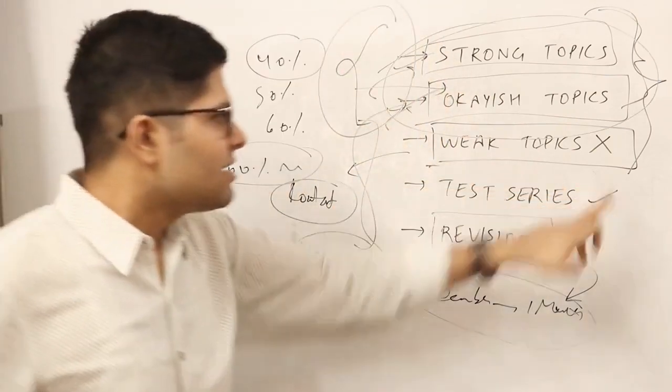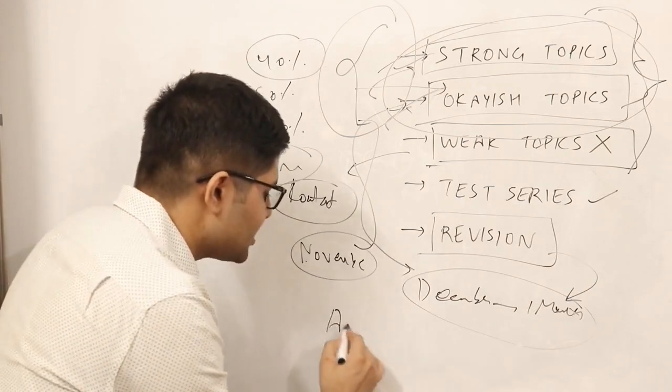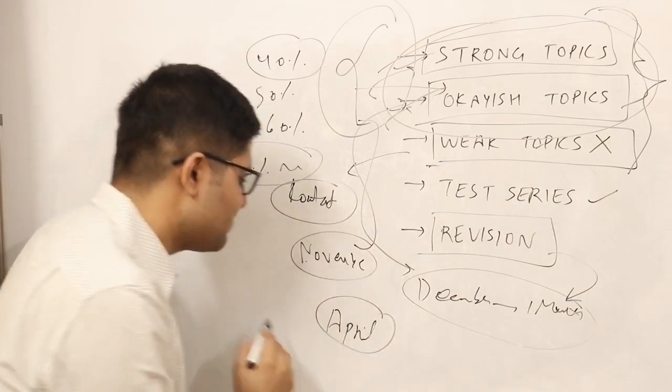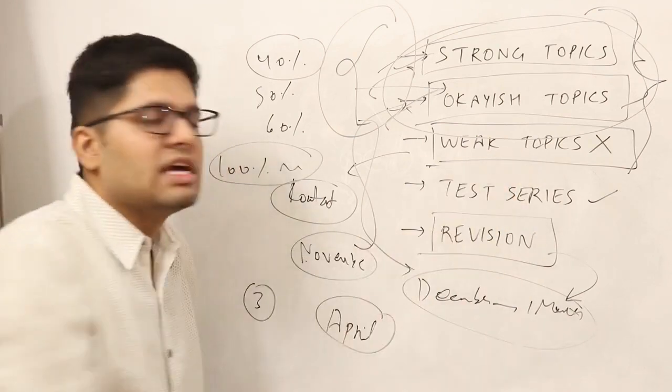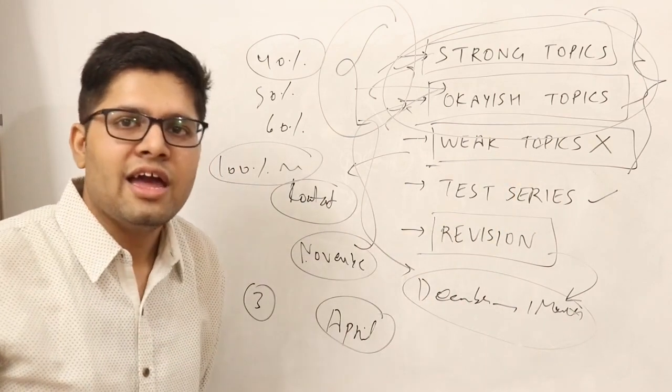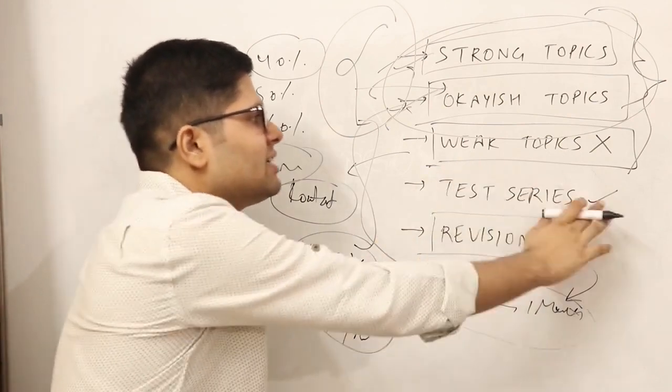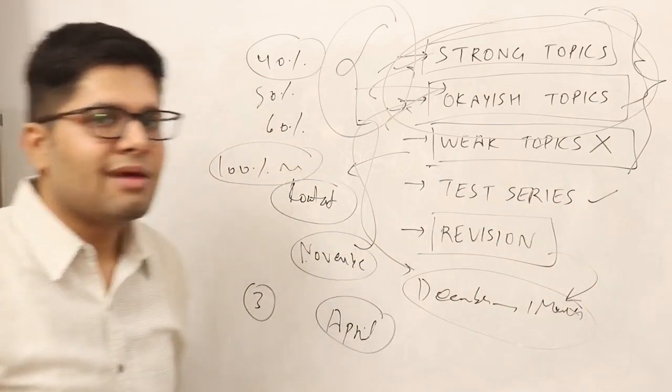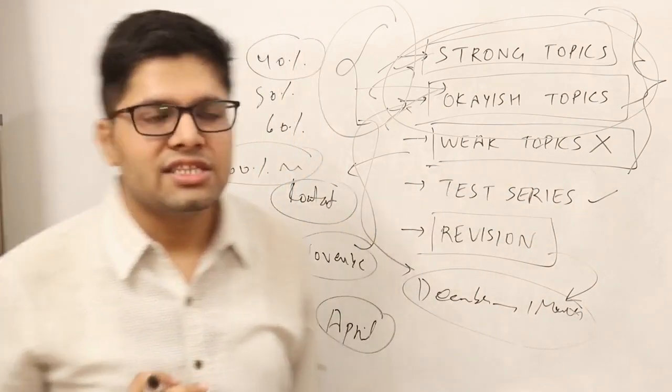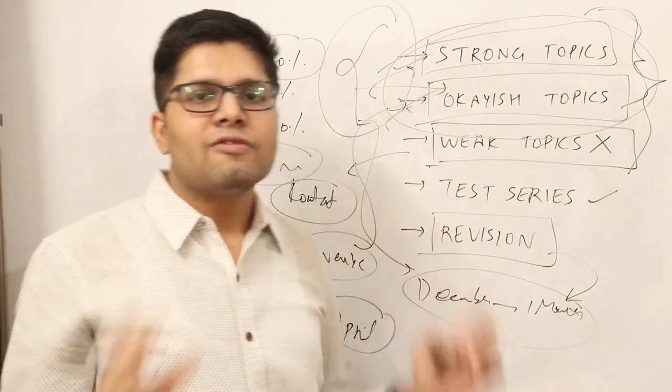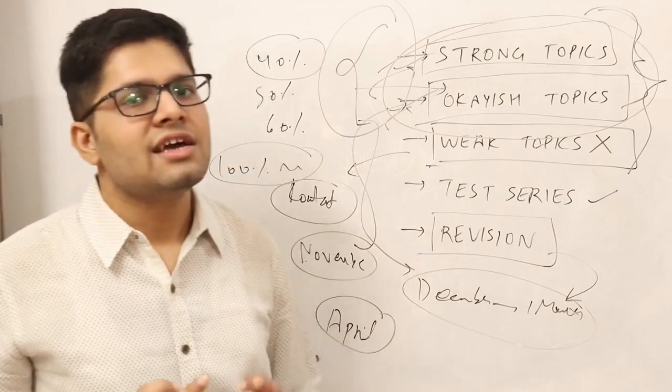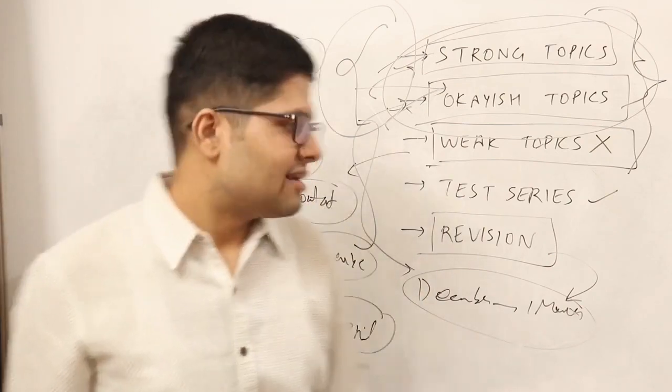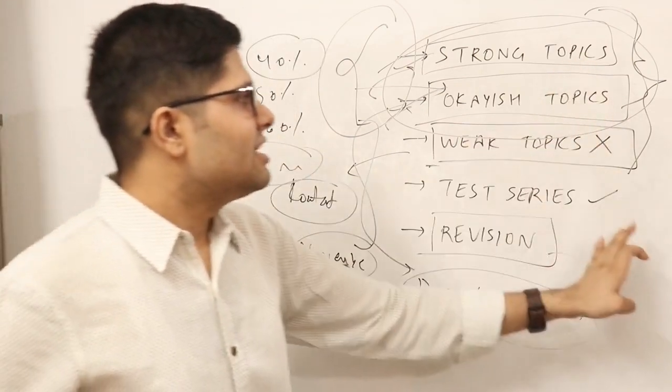Now you will say, what about weak topics? I will tell you. Your next attempt will be in April. In April, you will get all three months to study these weak topics. So then we will study those weak topics at that time. In January, you should have maximization criteria - that you select a handful of topics but you become really well in those. And that is how you will be able to clear it. Otherwise, you will not be able to succeed. So I hope I made this clear to you.